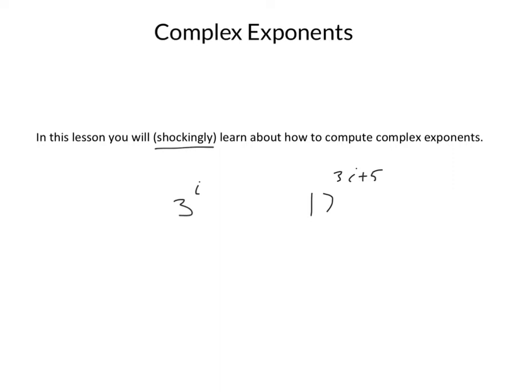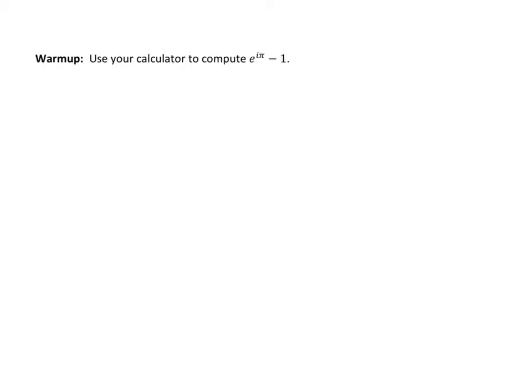But before we get started, let's take a deep breath and begin. So I want to start this with a calculator exercise. I want you to use your calculator to compute e to the i pi minus 1. You might not even have been aware that your calculator has the imaginary number on it. If you've got a TI-84, it's right above the decimal button. So if you do e to the i pi minus 1 on your calculator, you find that this is negative 2.